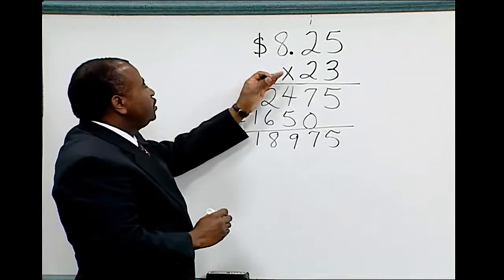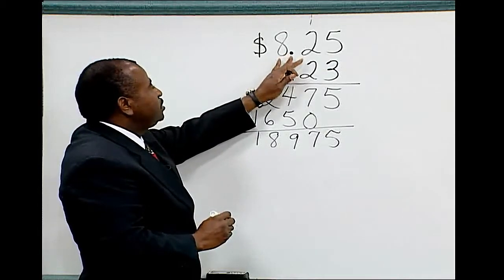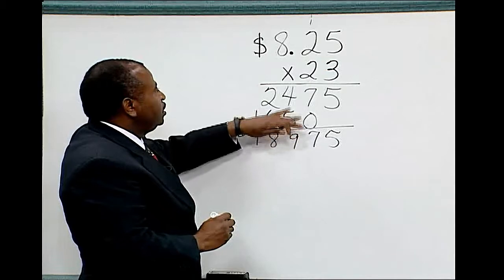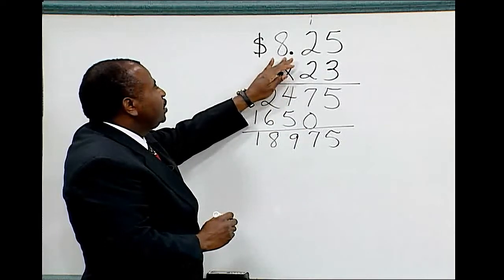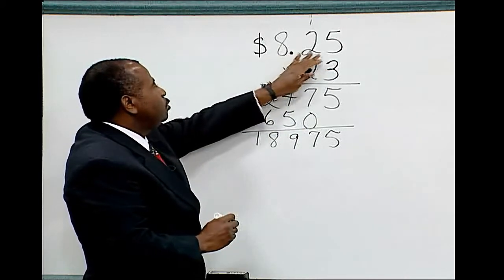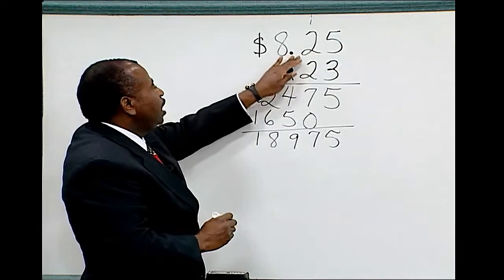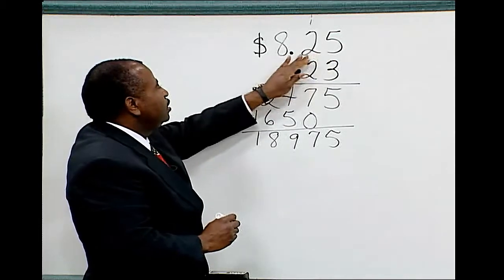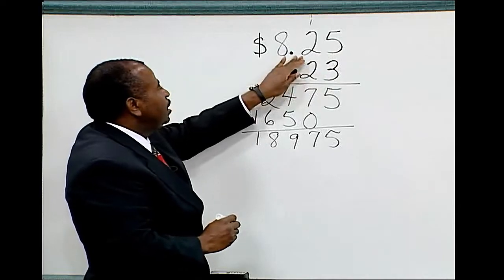The only difference is that we have to place a decimal in our answer. We determine the decimal place by counting the places to the right of the decimal point. $8.25 has two numbers behind the decimal point.